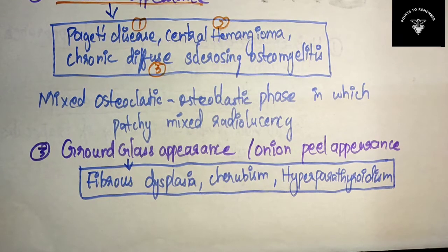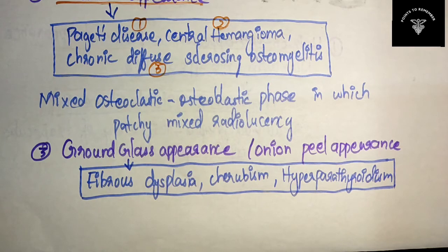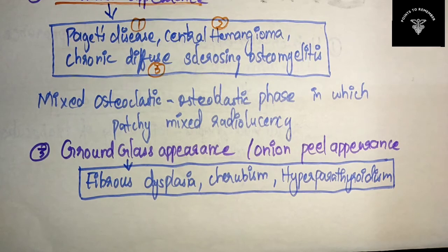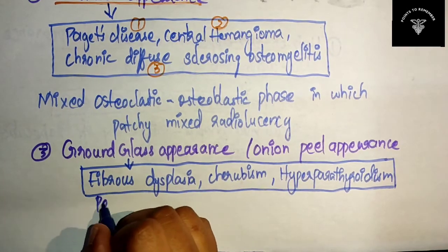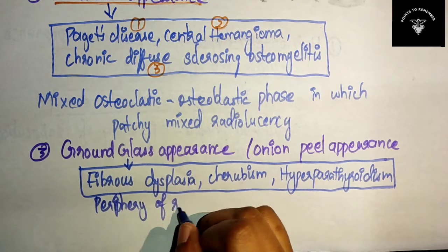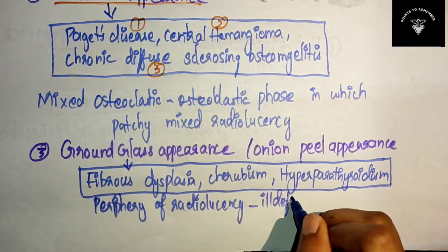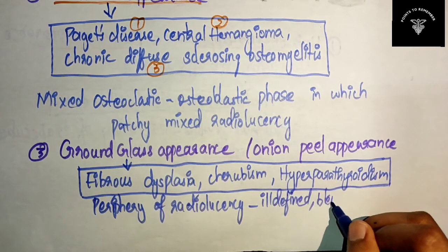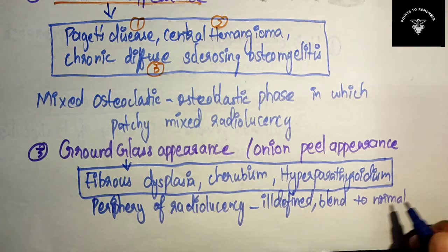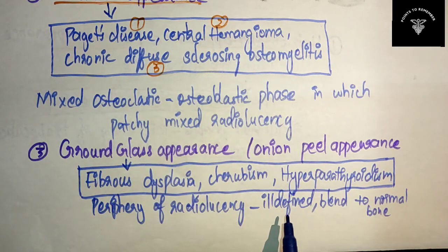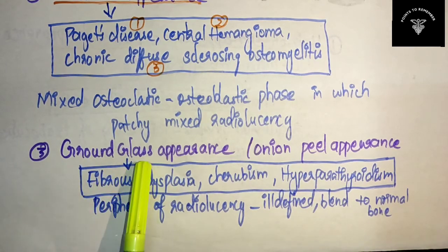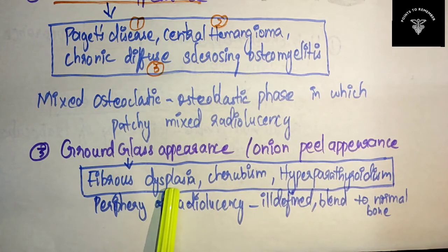What is the ground glass appearance? The periphery of the radiolucency will be ill-defined and it appears to blend into the surrounding normal bone. This radiographic thickening of the skull base gives the ground glass appearance, also known as the onion peel appearance in fibrous dysplasia.